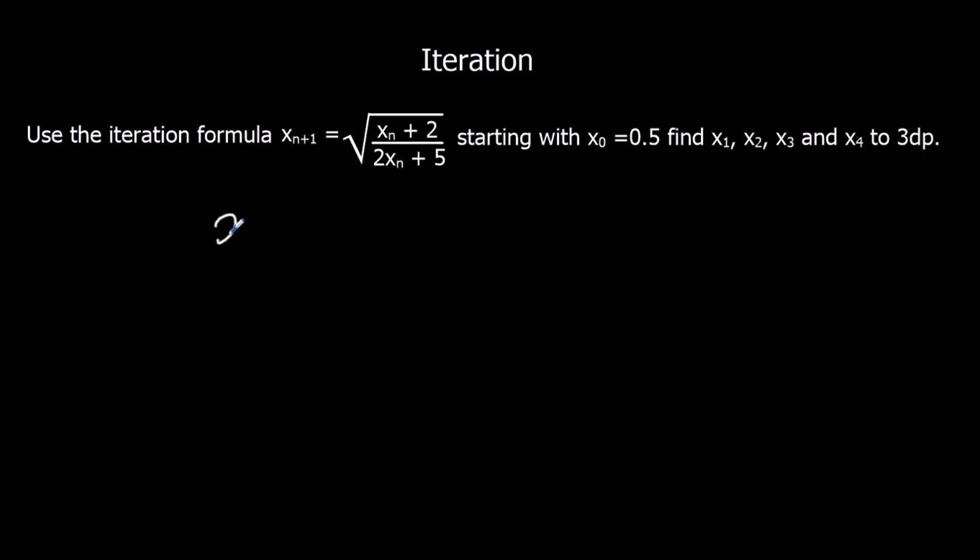Okay, so x1 is going to be the square root of 0.5 plus 2 over 2 times 0.5 plus 5. So we've got two x's this time. That doesn't make a difference. We just substitute the value into both of them. So type it into the calculator. And we get 0.645 to three decimal places.